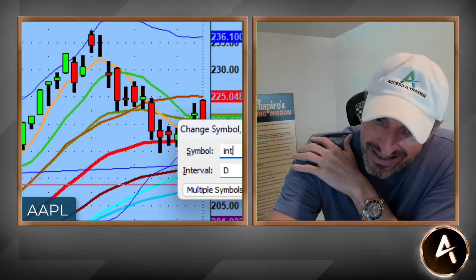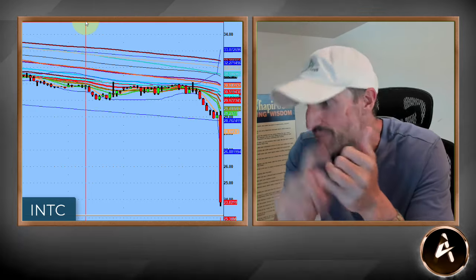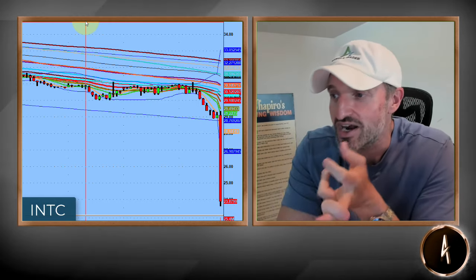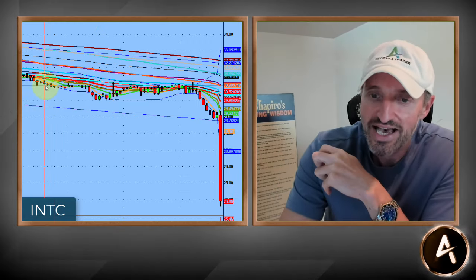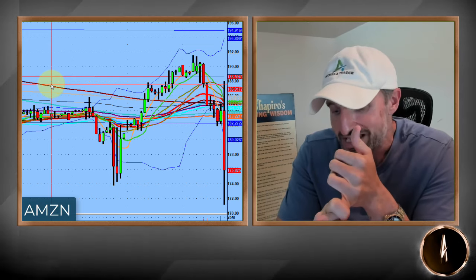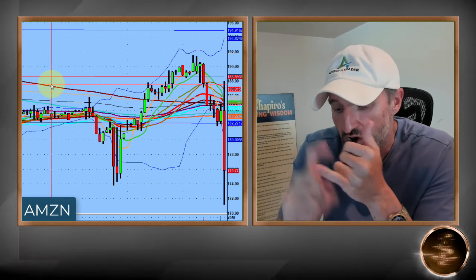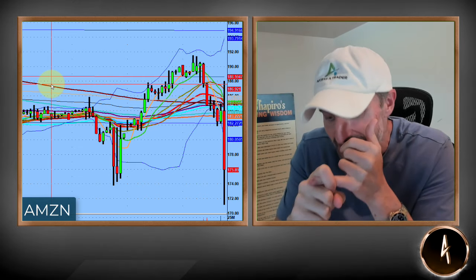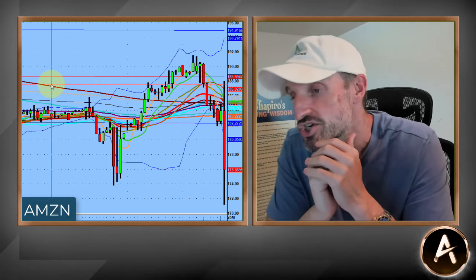Intel came out with earnings and missed on all metrics — missed their top line, missed their bottom line. They're cutting jobs and suspending their dividend, which is not really a great sign. And last but not least was Amazon. Amazon beat on their top line revenues, but the most important part is they missed on net earnings, which is not good. You can see Amazon is getting shelled as well.